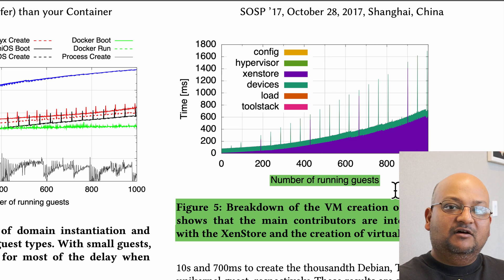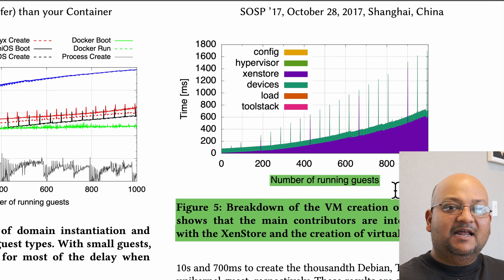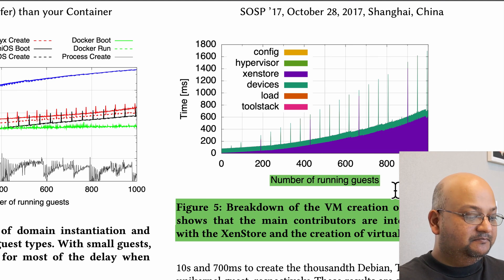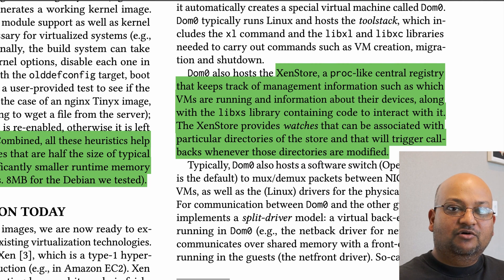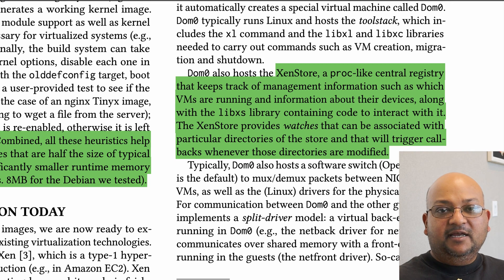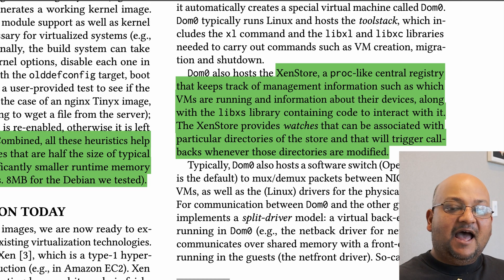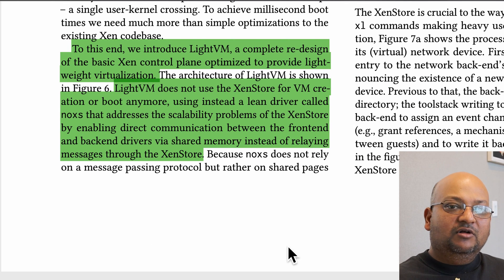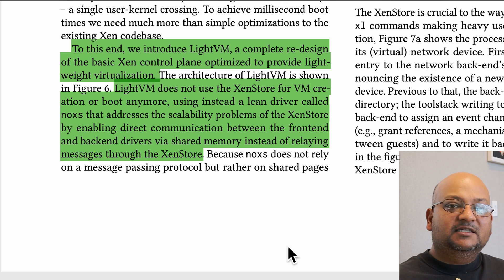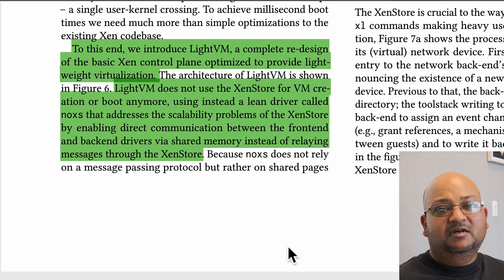Looking at the overhead of Xen virtual machines, as you instantiate more and more guests on the server, the vast majority of overhead goes into the Xen store and device creation. The Xen store is a central persistent store of metadata related to virtual machines — it keeps track of what virtual machines are running, what virtual devices they have, and so on. This central store becomes a bottleneck as more virtual machines are instantiated. The authors have designed a new architecture around Xen called LightVM, which bypasses the Xen store altogether because it was such a big bottleneck.